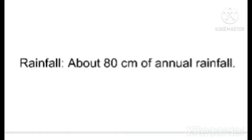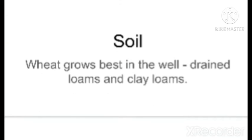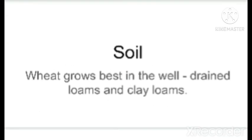This winter rainfall gives enough water for the ideal growth of the wheat crop. Sometimes the occurrence of frost at the flowering time, or hailstones at the time of ripening, can lead to damage of the wheat crop. So the climatic conditions that hinder wheat growth are: high temperature, excessive rainfall, frost at the time of flowering, and hailstones at the time of ripening.